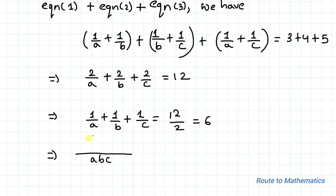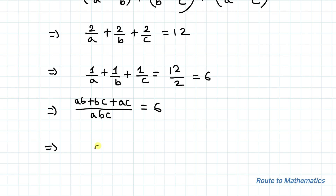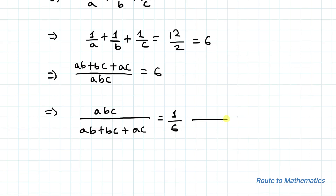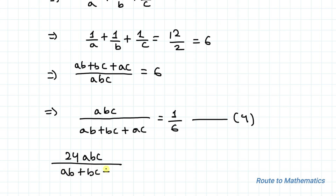Taking the reciprocal of 1/a plus 1/b plus 1/c equals 6, we get abc divided by ab plus bc plus ac equals 1/6 — let's call this equation 4. We are asked to find 24abc divided by ab plus bc plus ac. From equation 4, multiplying both sides by 24 gives 24abc divided by ab plus bc plus ac equals 24 divided by 6, which equals 4.